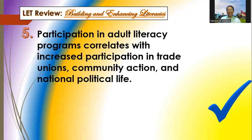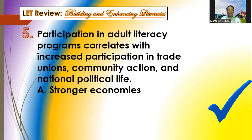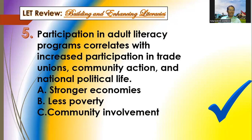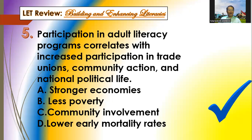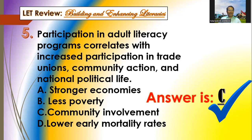Question number five: participation in adult literacy programs correlates with increased participation in trade unions, community action, and national political life. Options: A is stronger economies, B is less poverty, C is community involvement, and D is lower early mortality rates. The answer is letter C — community involvement, wherein we can have community action and participation in national and political life.